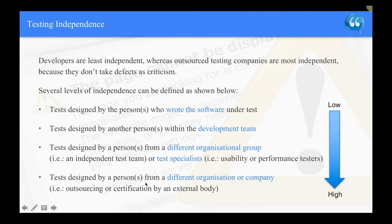The definition of test independence is quite important. Developers are the least independent, whereas outsourced testing companies are more independent because they don't take feedback as criticism. Several levels of independence can be defined: test design by the person who wrote the software is the least independent; test design by another person within the development team; test design by a person from a different organizational group, an independent test team, or a test specialist such as usability or performance testers. The most independent is test design by a person from a different organization or company — outsourcing or certification by an external body.